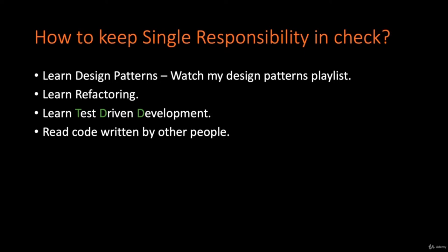If you master the Single Responsibility Principle, your code will start looking like a jigsaw puzzle — each piece having one and only one responsibility, crisp and clean, doing one thing with extreme excellence. To keep SRP in check: start learning design patterns, learn refactoring principles, go for test-driven development, and read code written by other people. Writing unit tests helps remove additional responsibilities from classes. That's my take on understanding the Single Responsibility Principle. If you have any doubts, let me know in the comments. Goodbye.